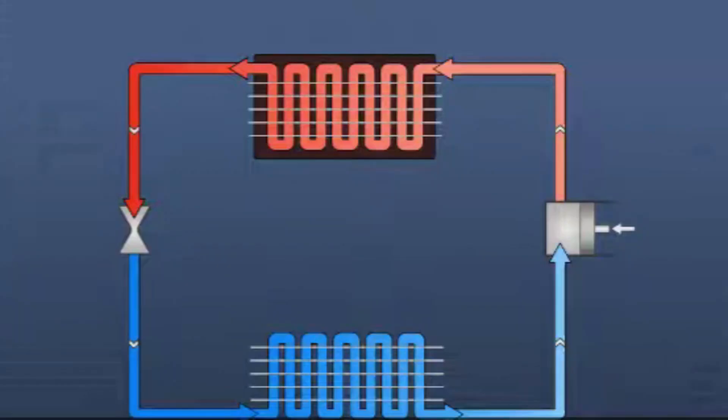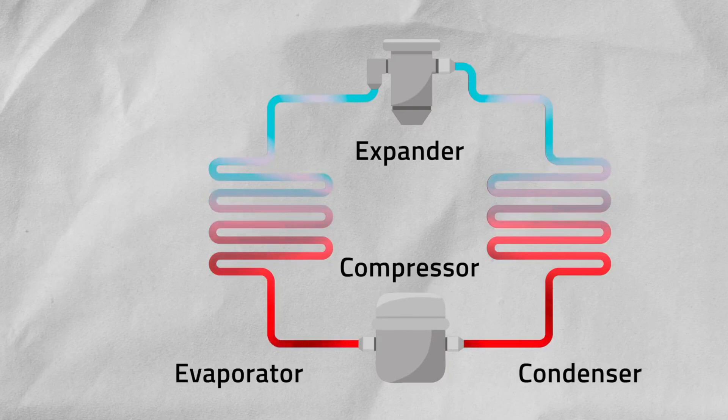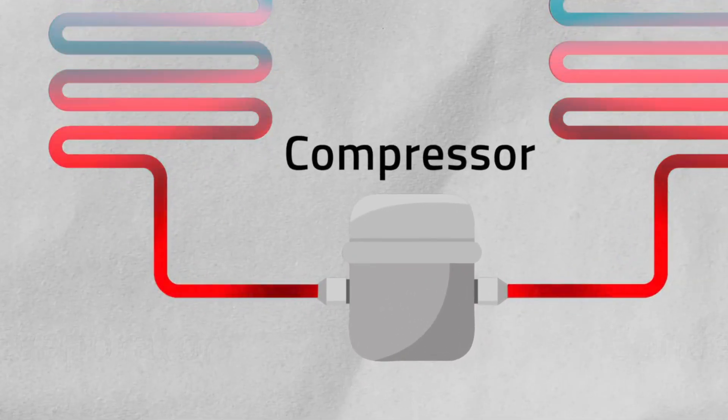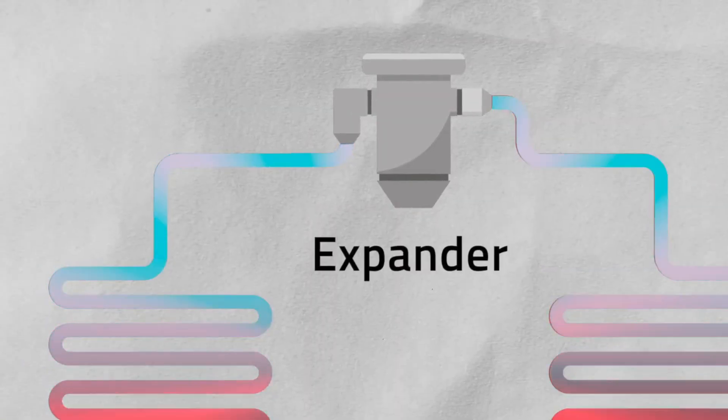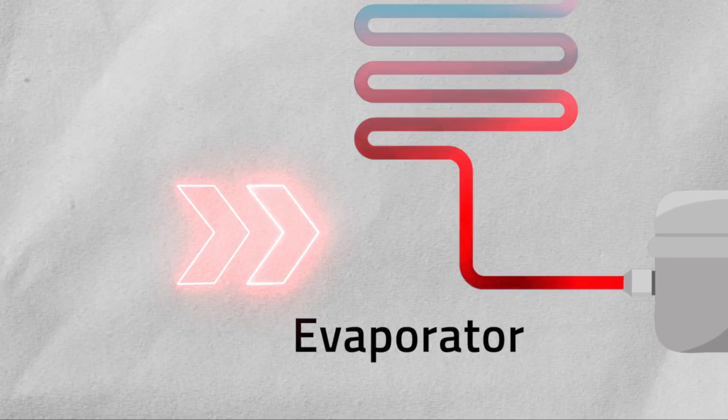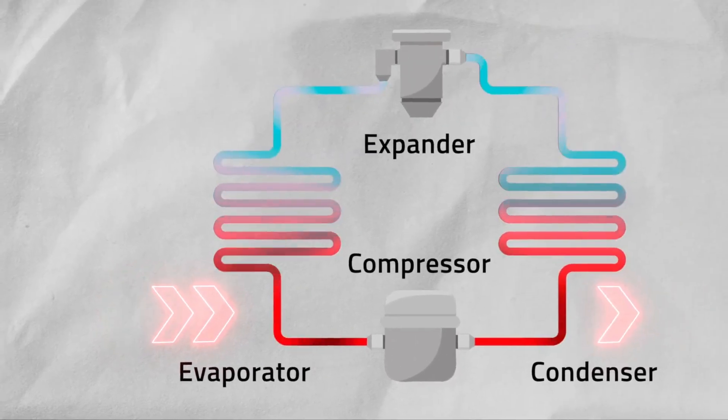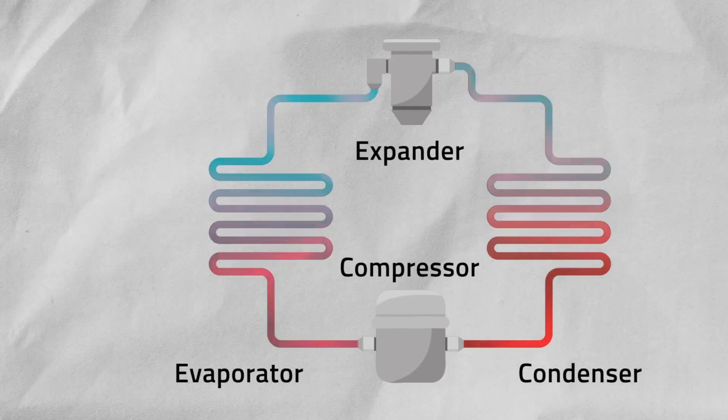The vapor compression cycle works in four steps. A compressor raises the pressure and temperature of the refrigerant gas. The condenser turns it into a liquid, releasing heat. The expander drops its pressure, making it cold. The evaporator lets it absorb heat from the surrounding air as it turns back into gas. The cycle repeats. And it works.